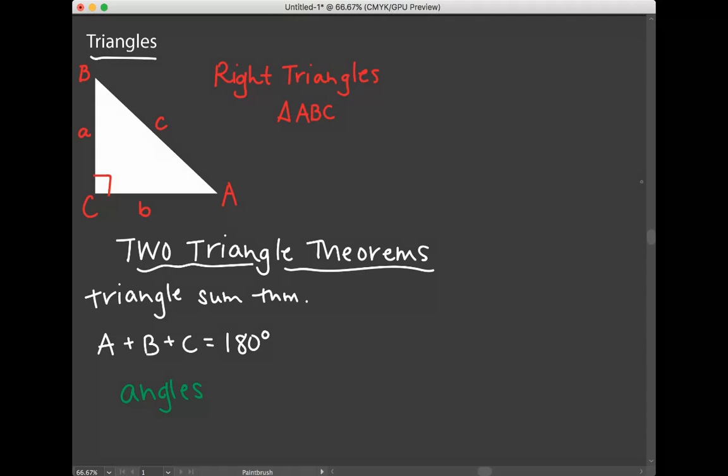The other theorem that we're going to use a lot in this unit, which you have also proven in geometry, is the Pythagorean theorem. The Pythagorean theorem tells us that A squared plus B squared is equal to C squared. And that theorem is referring to the sides of the triangle.